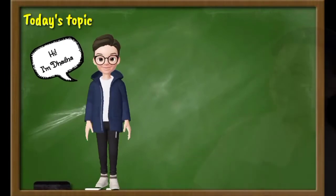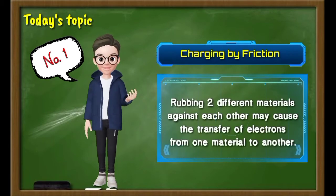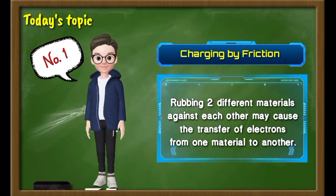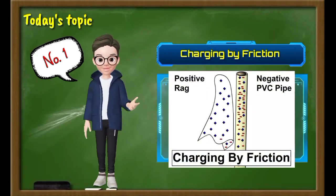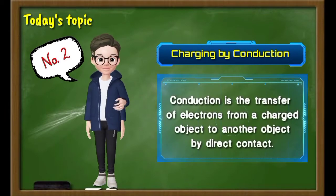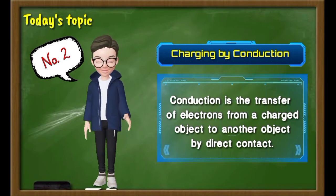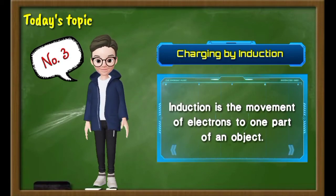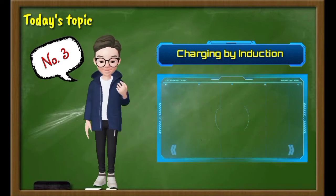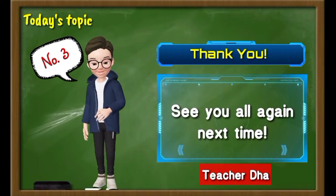Hello there, everyone. My name is Dada, and today I will be discussing the three charging processes. Number one, by rubbing or by friction: rubbing two different materials against each other may cause the transfer of electrons from one material to another, which upsets the balance between positive and negative charges. Number two, by conduction: conduction is the transfer of electrons from a charged object to another object. And last, by induction: induction is the movement of electrons to one part of an object; in the induction process, the opposite type of charge is induced. I hope you learned today. Thank you and have a nice day!